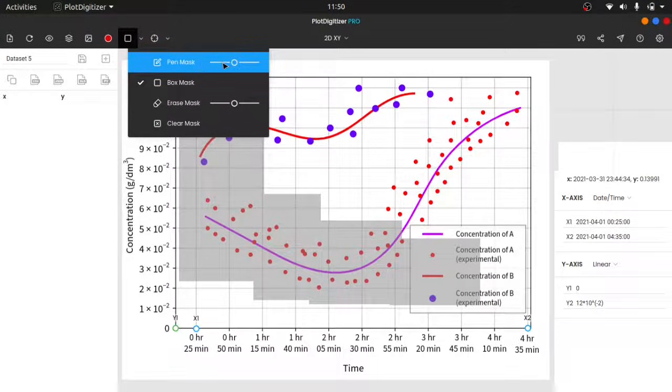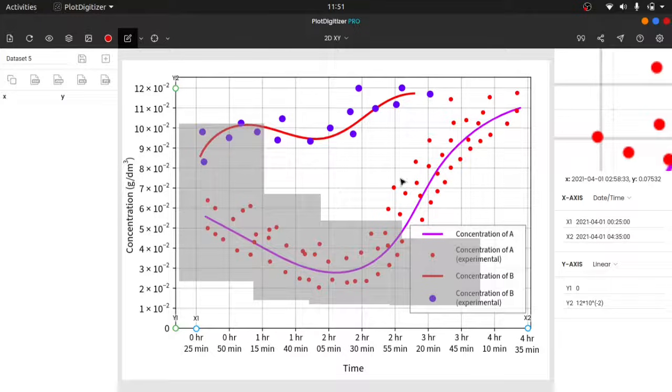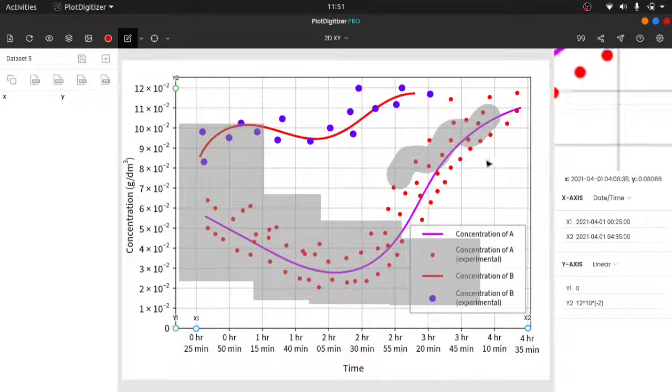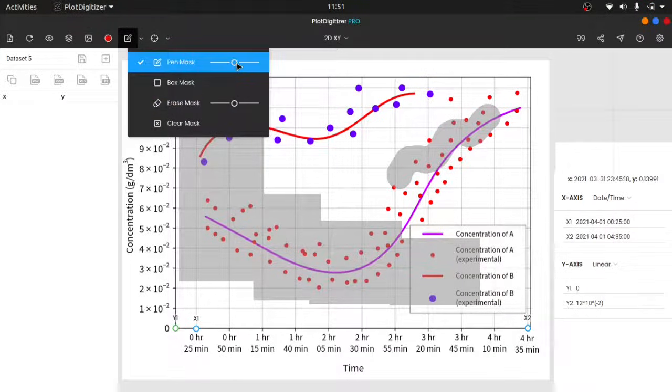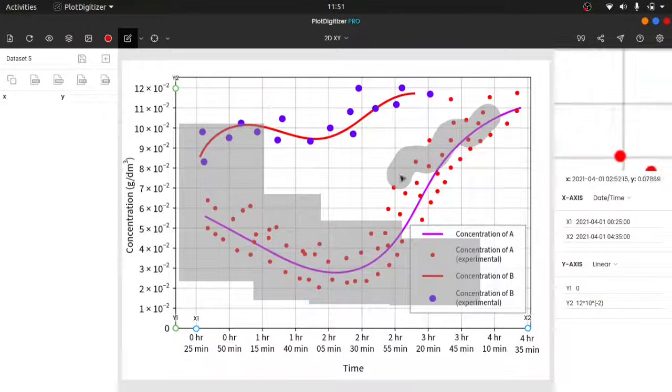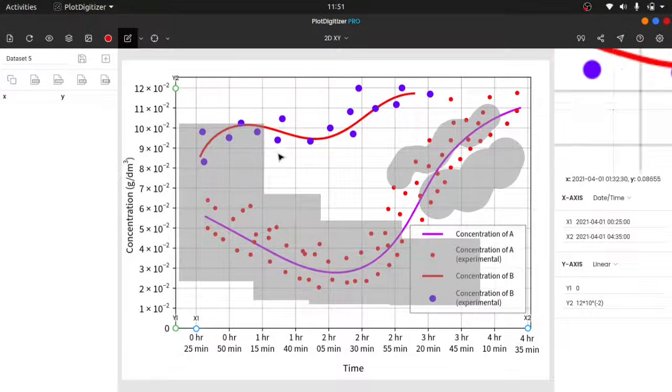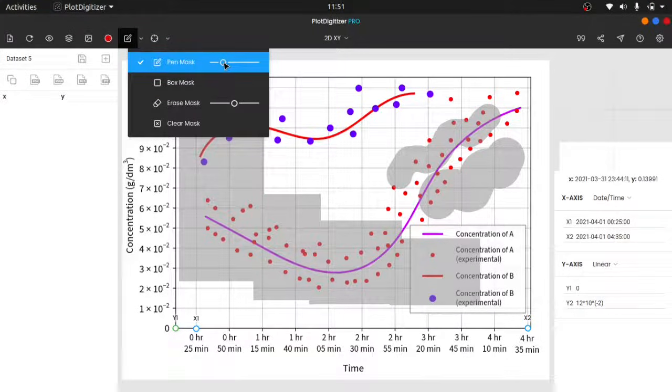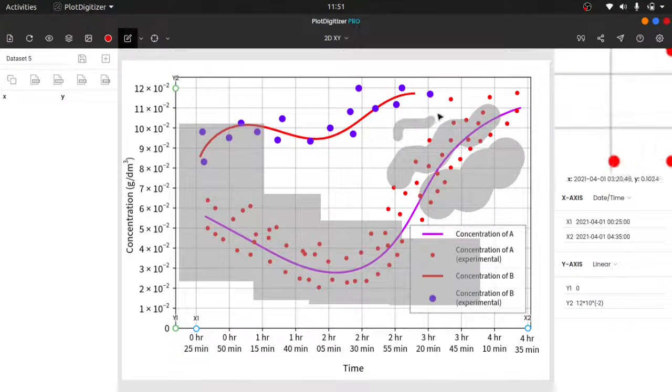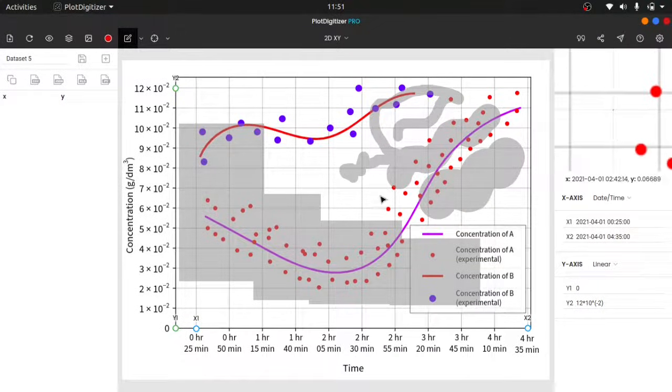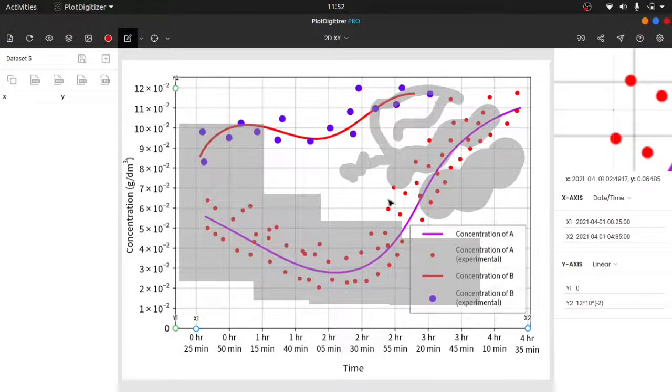On the other hand, the pen mask is like a pen. You can control the thickness of the pen mask. You can increase or decrease the thickness. The pen mask is best for extracting curves since it gives you more flexibility, while the box mask is perfect when objects are spread over a large portion of the image, like scattered points.